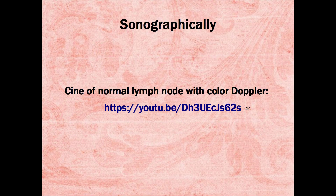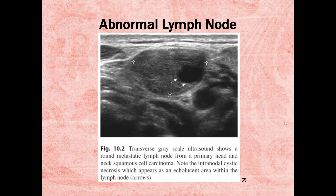Here is a link to a cine-loop of a normal lymph node with color Doppler. Here is a sonographic image of an abnormal lymph node. Transverse grayscale ultrasound shows a round metastatic lymph node from a primary head and neck squamous cell carcinoma.